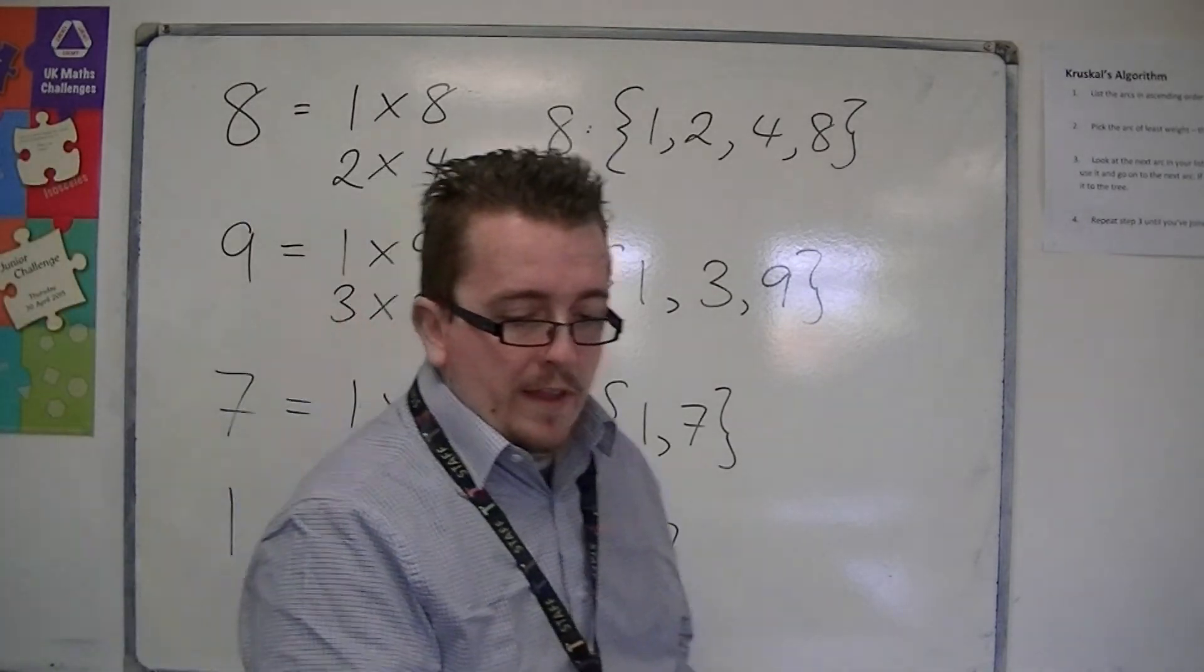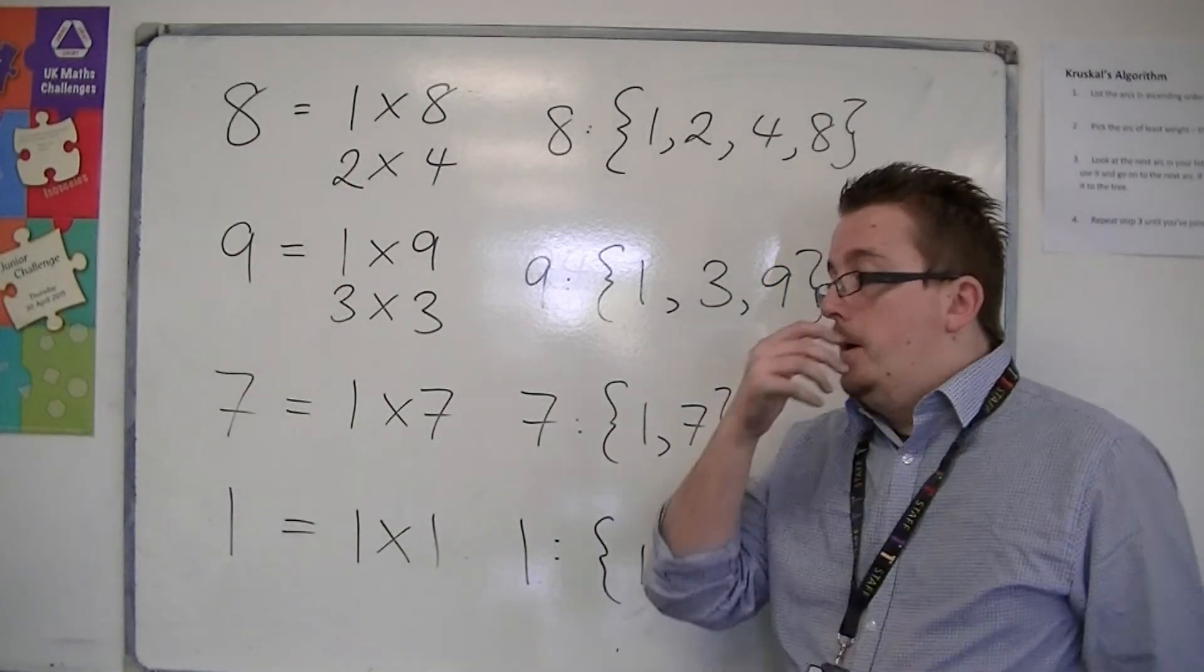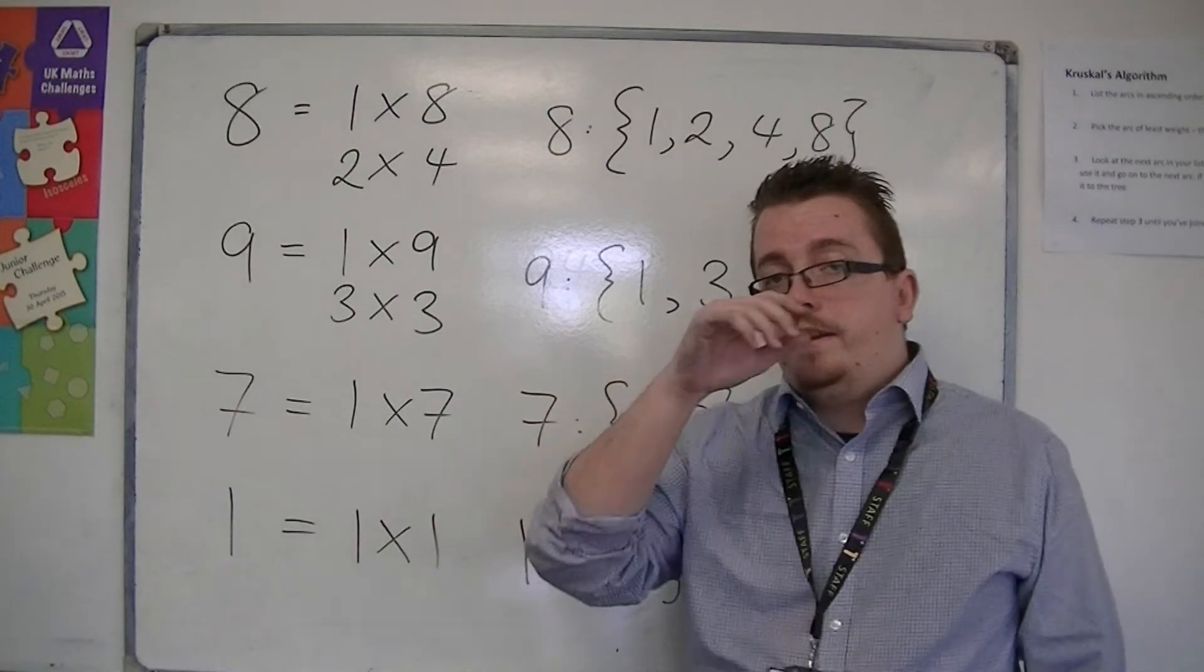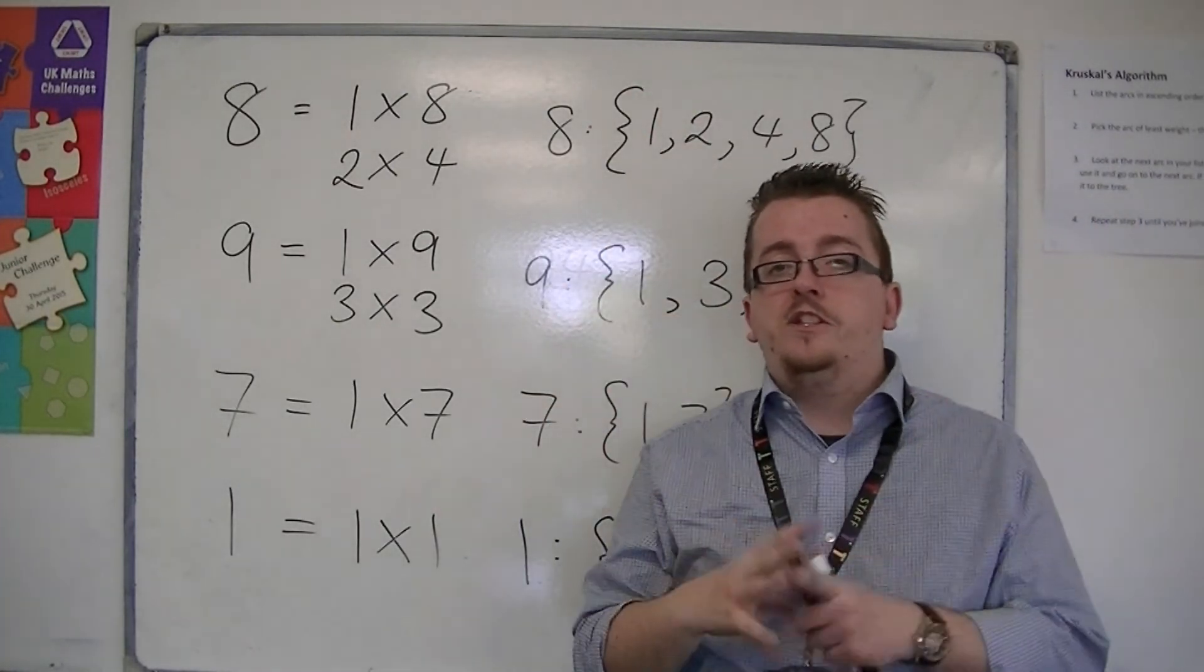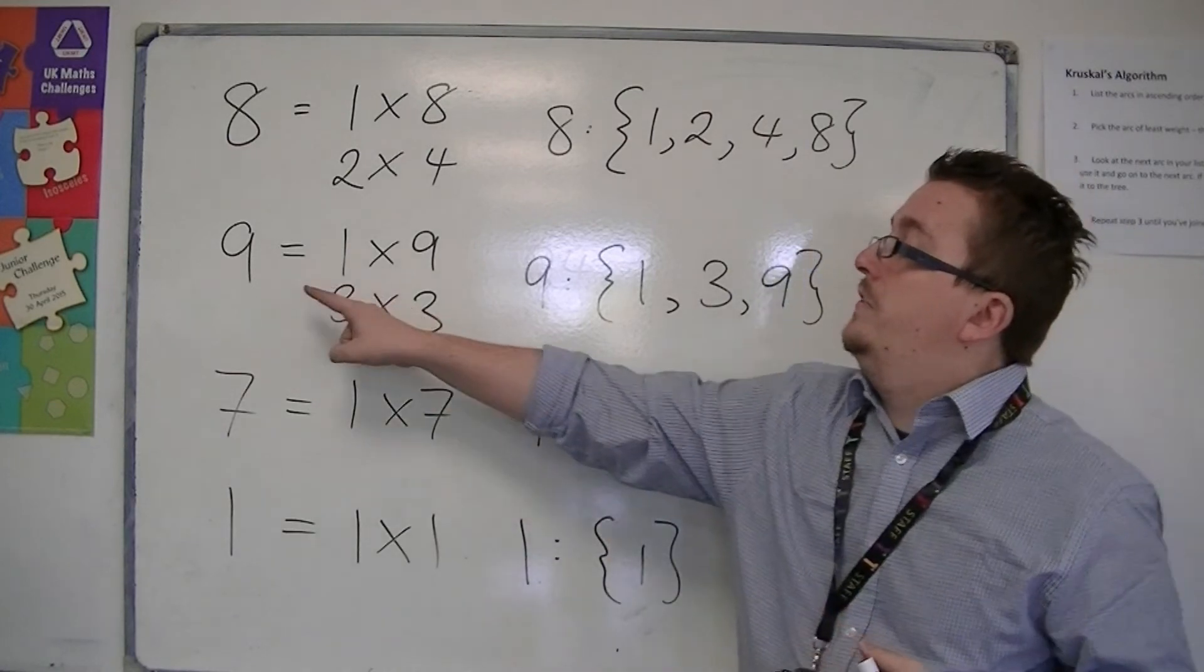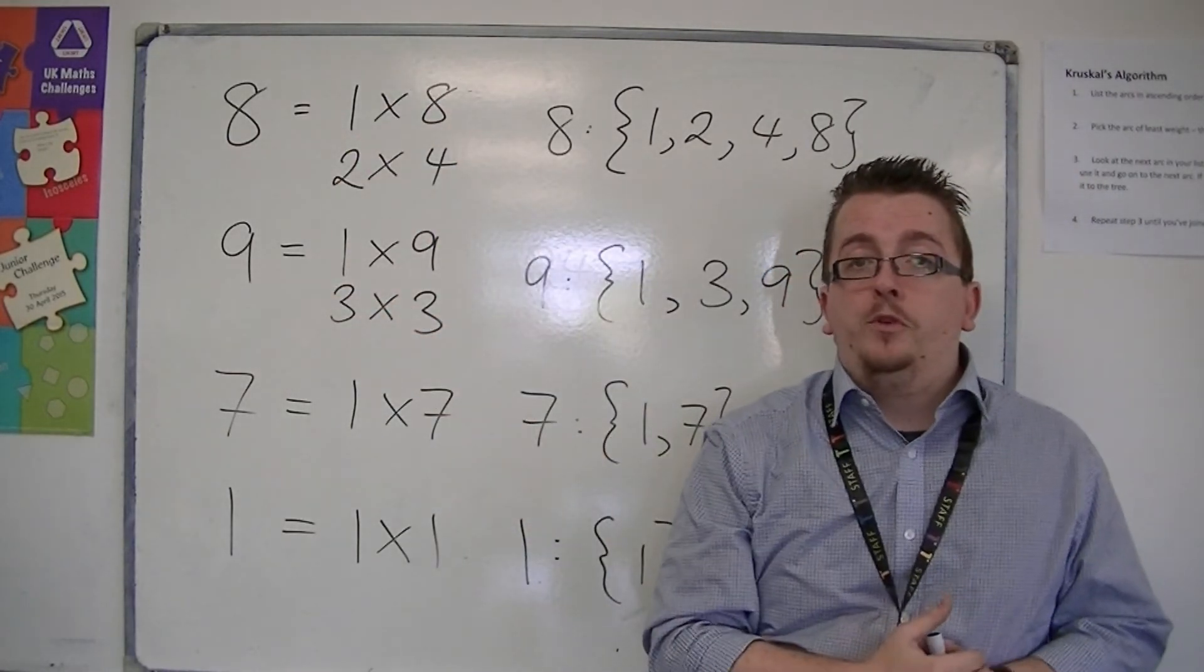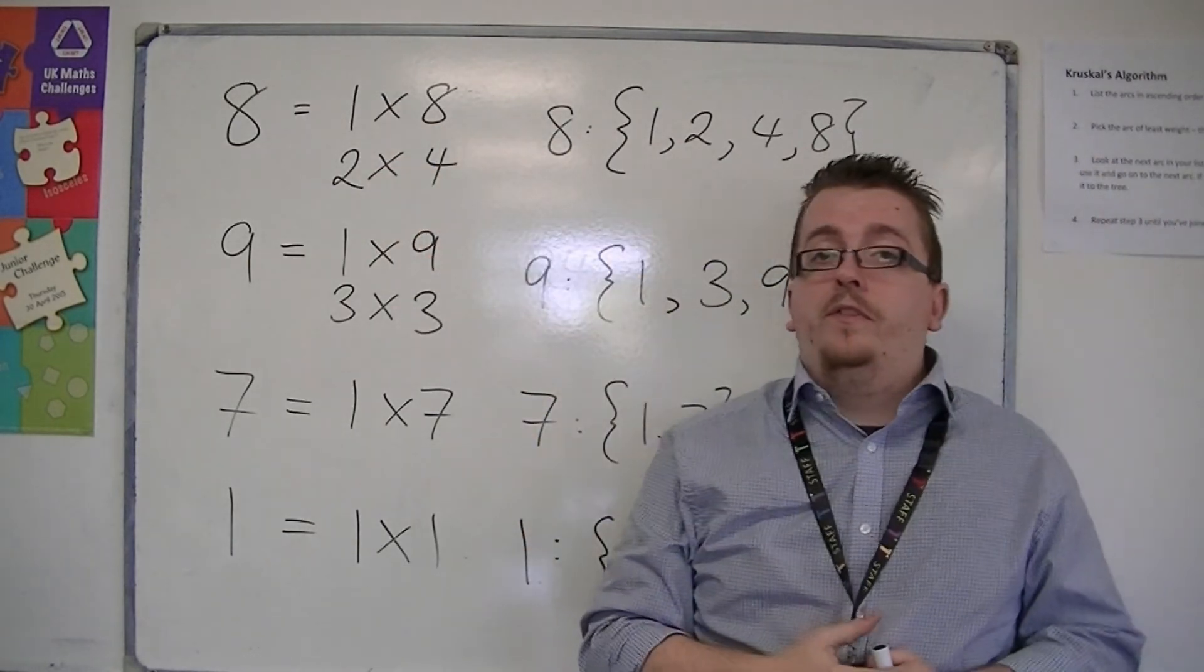So, from this, we are going to get some information which we're going to look at in the next couple of videos. But this is how you can find the factors of a number. Try and find all the different ways that you can multiply two numbers together to make the number you're looking at. So, for 8, it was 1 times 8, and 2 times 4. And then you can just read off, they are the numbers you're looking for. They are the factors.